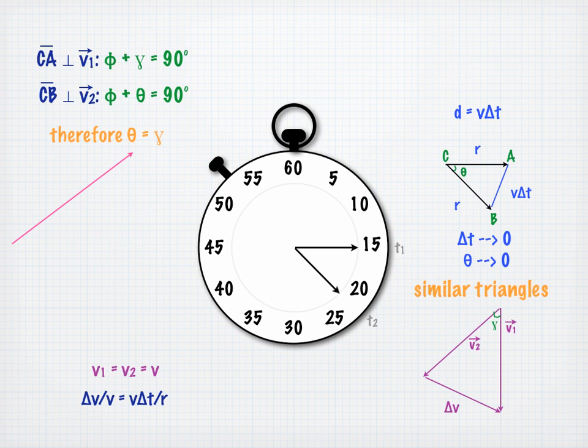Rearranging, we get delta V over delta t equals V squared over R. Delta V over delta t is an equation for magnitude of acceleration. So that means that we have found our expression for the magnitude of the centripetal acceleration.